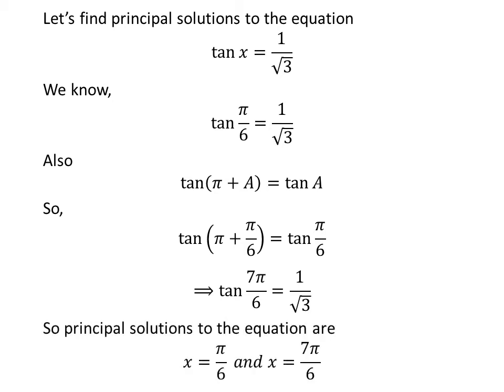So, the principal solutions to the equation tangent of x equals 1 upon square root of 3 are pi upon 6 and 7 times pi upon 6.